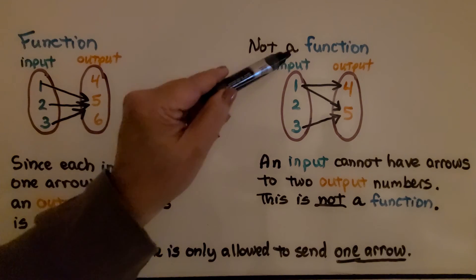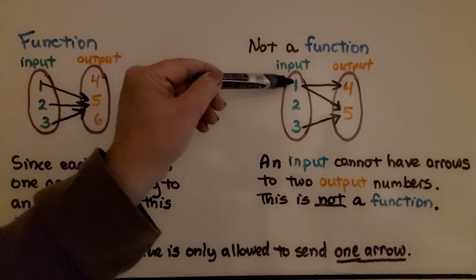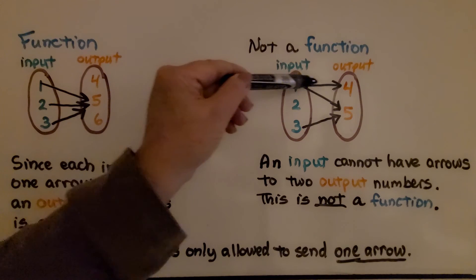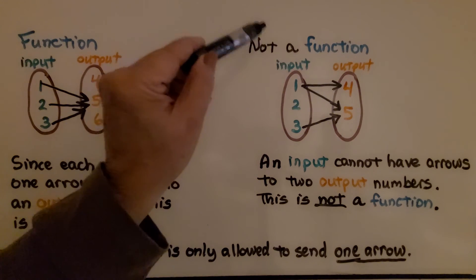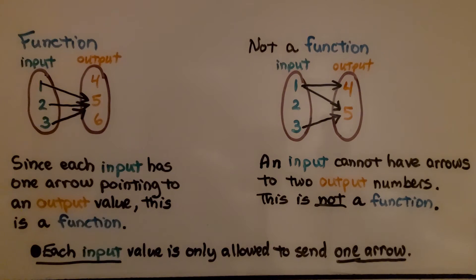Now look at this one. We have our input and our output. Uh-oh. This 1 is sending out two arrows, so that's not a function. An input cannot have arrows to two output numbers. This is not a function. Each input value is only allowed to send one arrow.